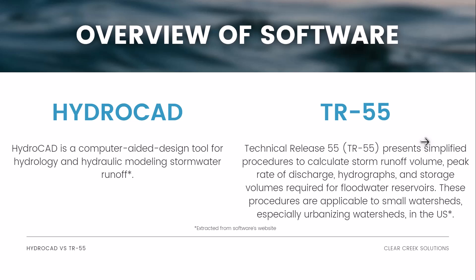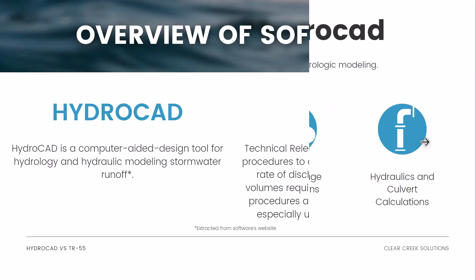HydroCAD is a computer-aided design tool for hydrology and hydraulic modeling of stormwater runoff. TR55, or Technical Release 55, presents simplified procedures to calculate storm runoff volume, peak rate of discharge, hydrographs, and storage volumes required for floodwater reserves. These procedures are applicable to small watersheds, especially urbanizing watersheds in the United States.